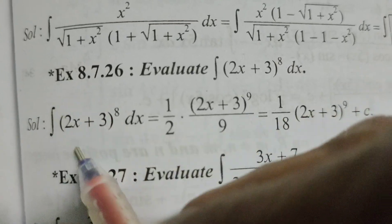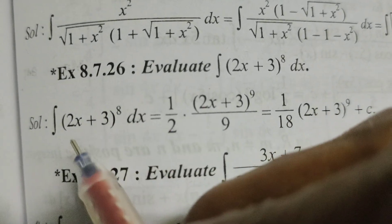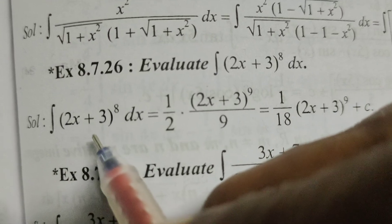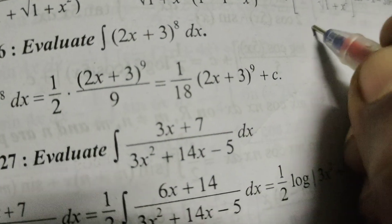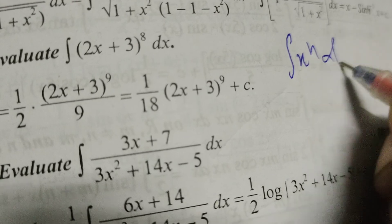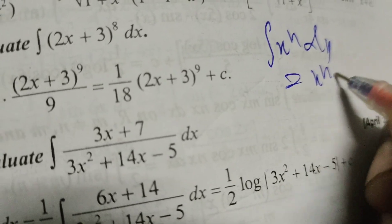Using the formula integral of x^n, here x means 2x + 3. Integral of x^n means x^(n+1) divided by n+1.